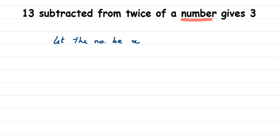Now we're going to form a linear equation. Let's read the question once again. They have given that 13 subtracted from twice of a number gives 3. Twice means 2 times a number, or double of a number. So if x is the number, twice of the number means 2x. So 2x is twice of a number. Now let's frame the equation.